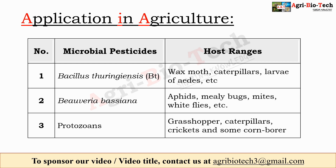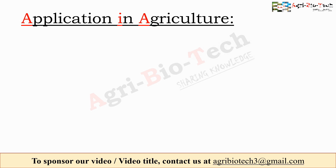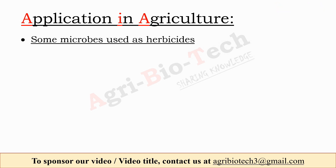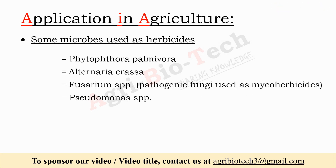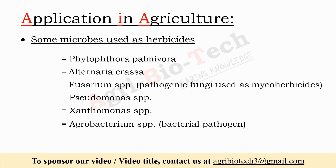The second microbial pesticide is Beauveria bassiana, whose host ranges are aphids, mealybugs, mites, and whiteflies. The third is protozoans, whose host ranges include grasshoppers, caterpillars, crickets, and corn borers. For microherbicides, pathogenic fungi used include Phytophthora palmivora, Alternaria crassa, and Fusarium species. Bacterial pathogens used include Pseudomonas species, Xanthomonas species, and Agrobacterium species.